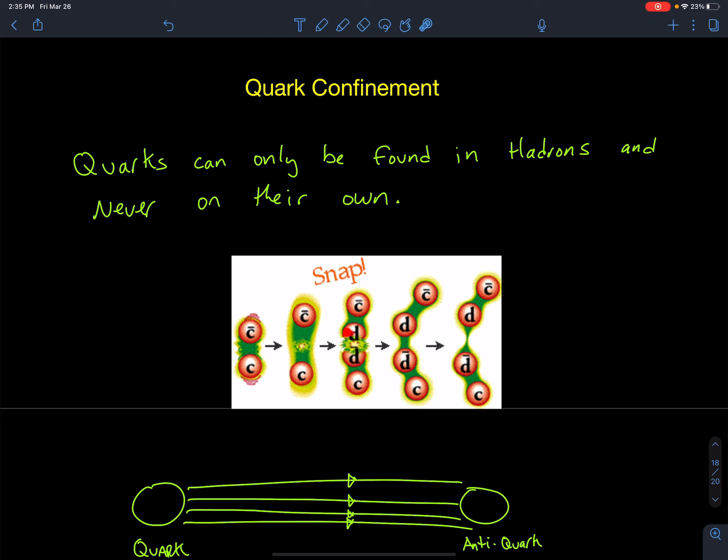But as I pull them apart, eventually if I do break it, another quark just appears. It'll never be by itself. So then I end up making mesons. If I break apart a meson, I'll just make more mesons, as you can see in the diagram over here.